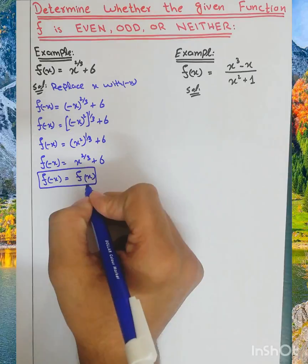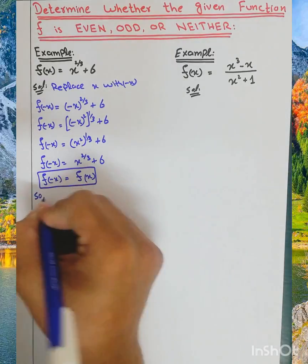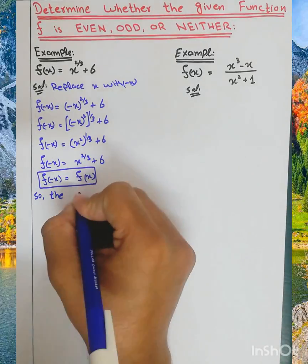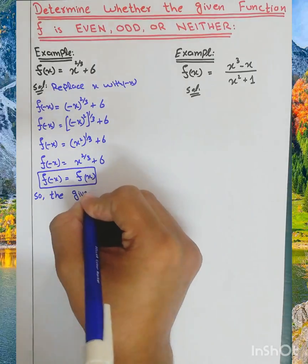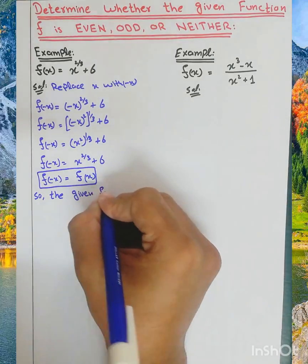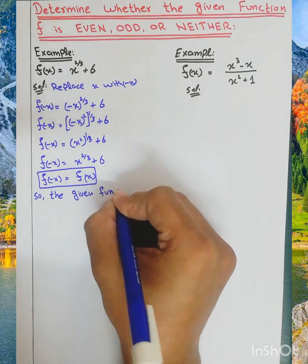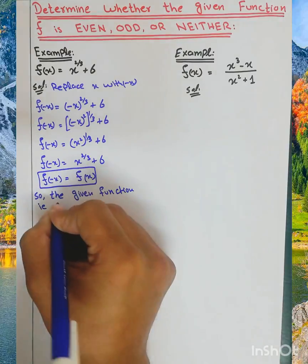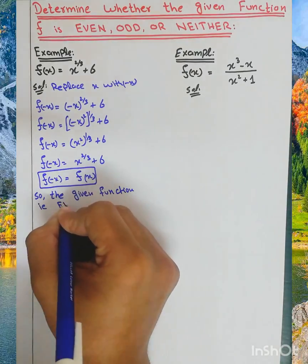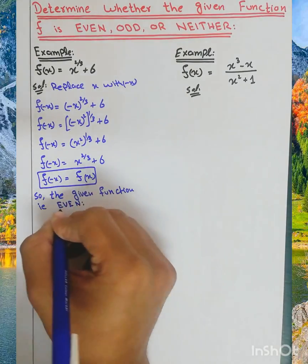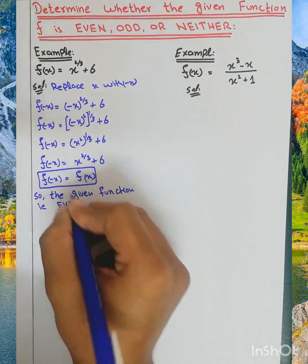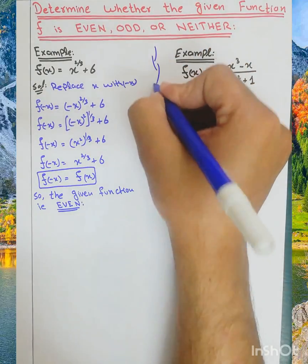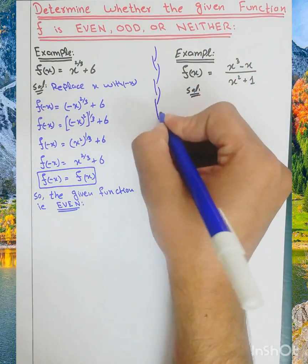Since f of minus x equals f of x, the given function is even. Now we will solve the next function.